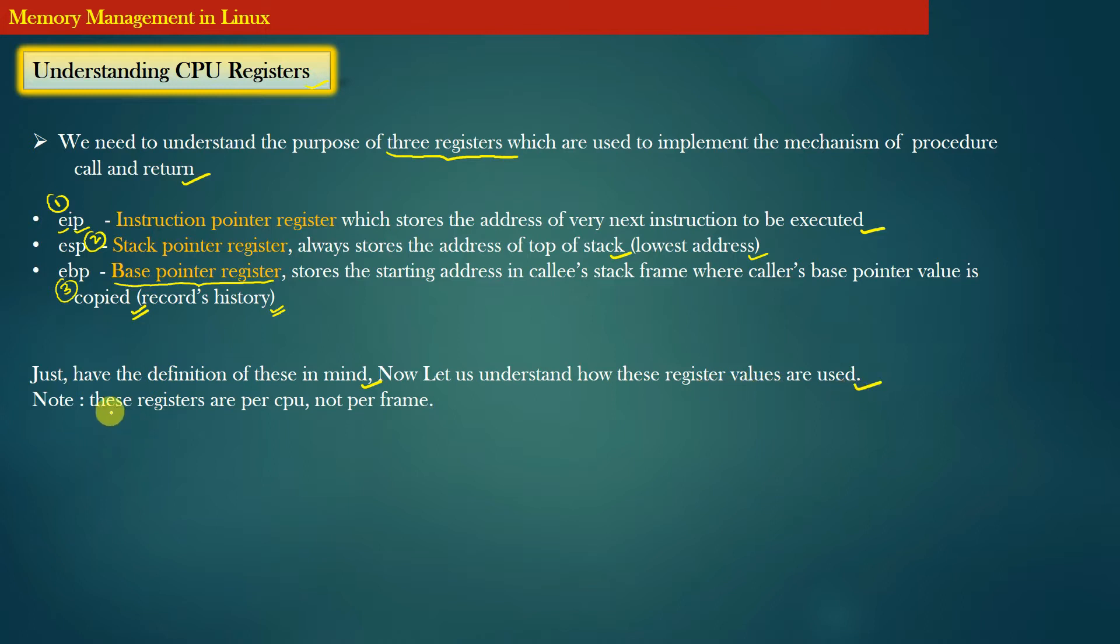Now let us understand how these three basic registers are used. Also note that there are only one instance of these registers per CPU. These registers are not per frame. These registers are actual pieces of small hardware chips which are embedded on your motherboard. So these registers are same as memory which stores the data.